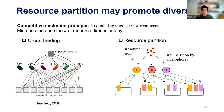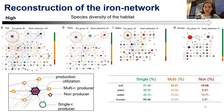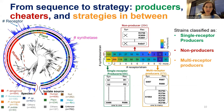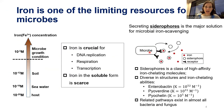Another question: when siderophores bind iron, and you supply more iron, more will end up in the labile iron pool and more will also be stored in iron storage proteins, which could be upregulated in response to larger iron supplies. How did you account for those intracellular compartments in your model?